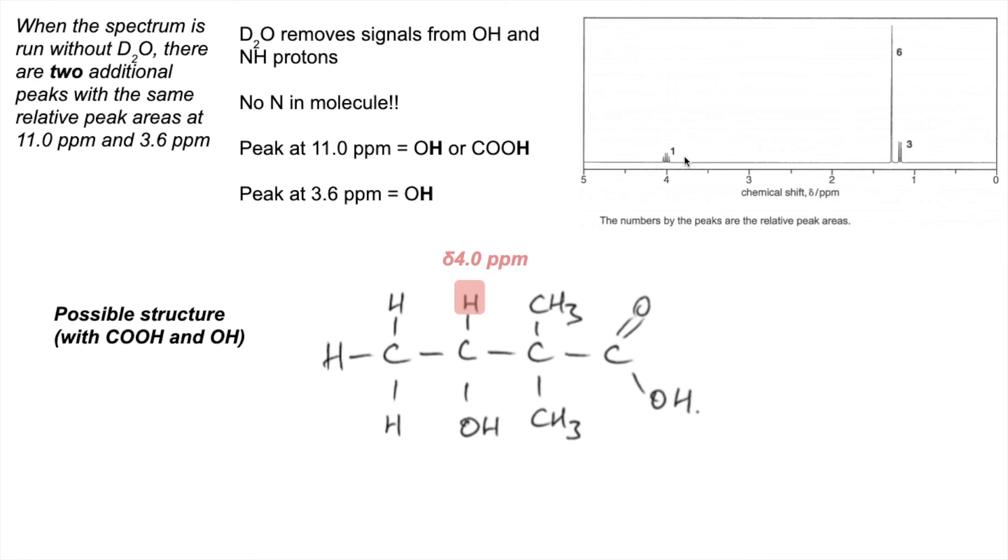There's its sort of partner there, so there's the doublet peak there. And that big tall peak is those two CH3 groups. So the peak at delta 11 I'm saying is due to the COOH proton. And the peak at delta 3.6 is that OH proton there.